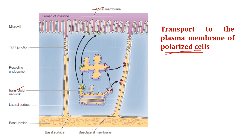This selective sorting occurs either directly at the trans-Golgi network or via recycling endosomes. For instance, in intestinal epithelial cells, the apical membrane — facing the intestinal lumen — is specialized for nutrient absorption and presents microvilli to increase cell surface area, while the basolateral membrane covers the rest of the cell. Proteins bound for the basolateral domain carry amino acid sequences such as dileucine or tyrosine-containing hydrophobic motifs in their cytoplasmic domains.